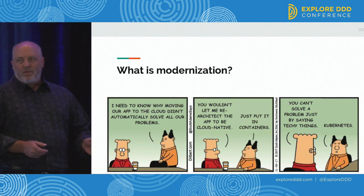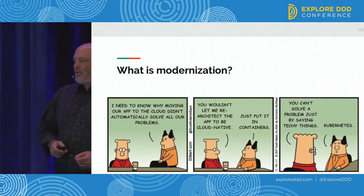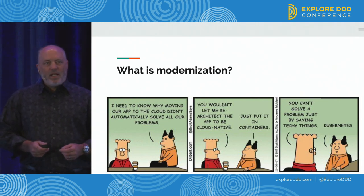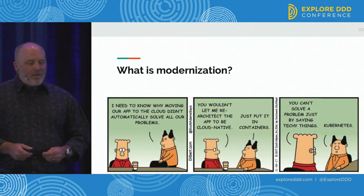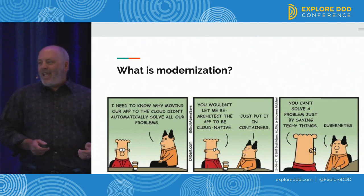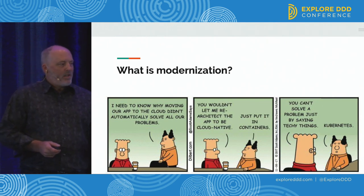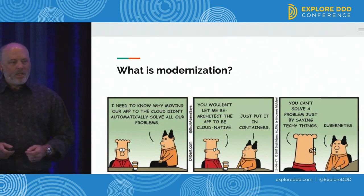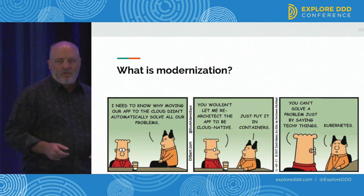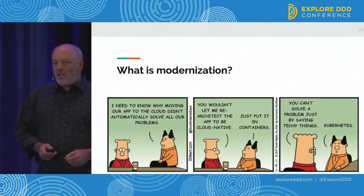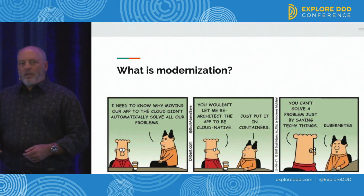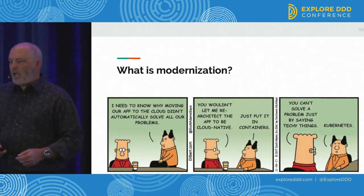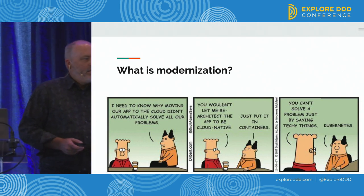I'm going to start talking about definitions. We've heard a lot about different definitions and how important ubiquitous language is. The first one I always have trouble with is: what is modernization? Really, what modernization means is figuring out what the pain is and solving it. To some people it might be 'we're running on Java 6 and it's end-of-life.' In more cases, it's business and market forces forcing you to stay competitive, and your architecture doesn't allow you to do that.